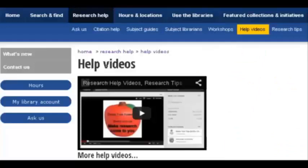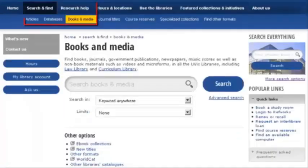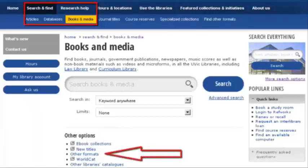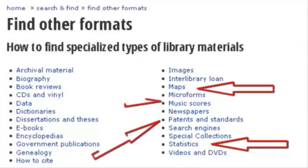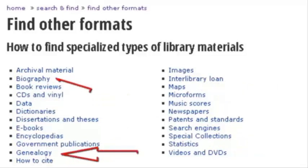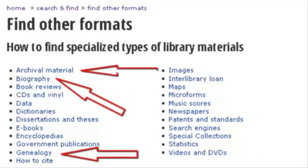You can track down other types of material by going to Books and Media and selecting Other Types of Material. Get statistics, patents, maps, or music. Solve the mysteries of history with genealogy, biographies, and archival material.